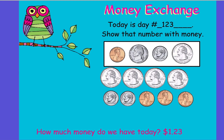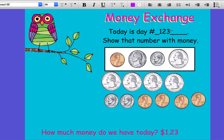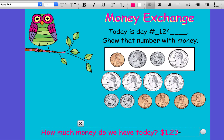If I gave you a penny for every day you've been in school, you would have 25, 50, 75, a dollar, a dollar 10, a dollar 20, a dollar 21, a dollar 22, a dollar 23, and a dollar 24. We are on day 124 — yesterday we had a dollar 23, today we have a dollar 24.